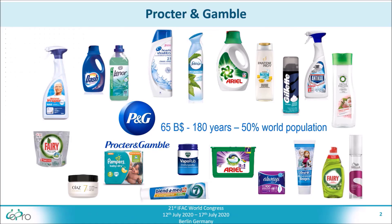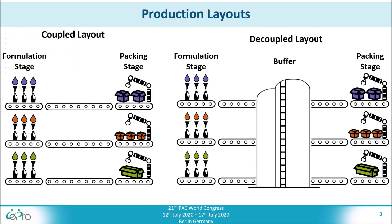The work was done with Procter & Gamble, a company from the consumer goods industry, producing a wide variety of products for different markets. In this contribution, two different layouts of a make-and-pack production plant are considered. The plant consists of several parallel lines, and each line consists of two stages: the formulation stage and the packing stage.